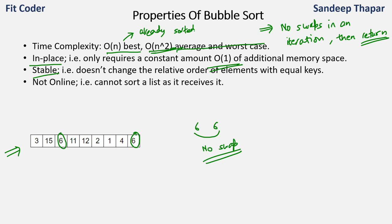This algorithm is not online. That means if we have a stream of elements coming in, we cannot use bubble sort to sort it. Because in each iteration of bubble sort we are reducing the scope of the array since we've placed one element at the end — it needs to know beforehand which is the largest element. So if we are receiving a continuous stream of elements, we cannot apply bubble sort, making this algorithm not online.